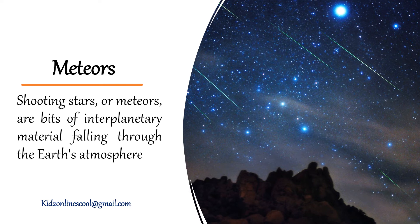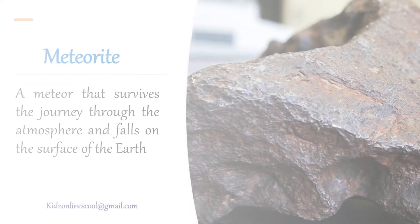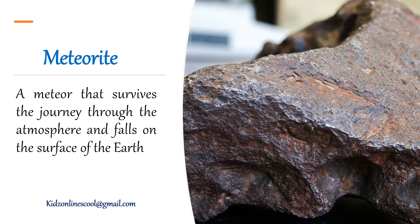Meteors: shooting stars or meteors are bits of interplanetary materials falling through the Earth's atmosphere. Meteorite: a meteor that survives the journey through the atmosphere and falls on the surface of the Earth.